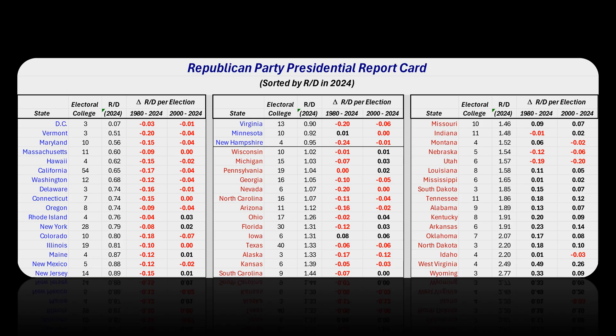The trends are shown as the amount of change in the Republican to Democrat ratio every four years for every presidential election. If a state is trending Democrat, then its trend is shown in bold red. If trending Republican, then the trend is shown in bold black. As seen in the table, the longer-term trend is Democrat in D.C. and in 34 of the 50 states. The longer-term trend is also Democrat in all seven of the critical swing states, and trending four out of seven in the short term.